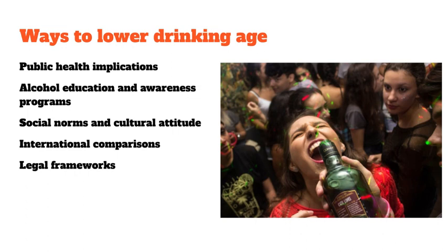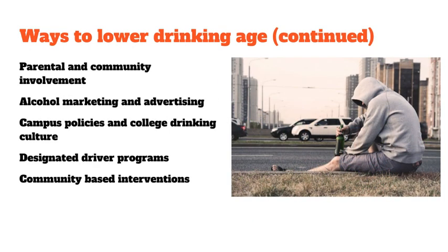Compare drinking age policies and outcomes across different countries with varying legal drinking ages, assessing the impact on alcohol-related harm, youth drinking rates, and societal attitudes towards alcohol use. Evaluate the legal and regulatory frameworks necessary to lower the drinking age safely and effectively, including considerations such as alcohol licensing laws, enforcement mechanisms, and penalties for underage drinking. You may also explore the importance of parental involvement and community support in addressing underage drinking and promoting responsible alcohol consumption, highlighting collaborative approaches and community-based interventions.